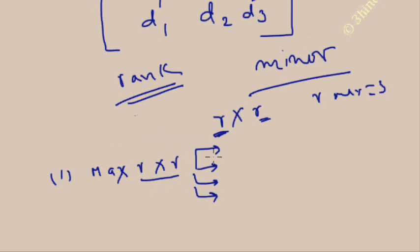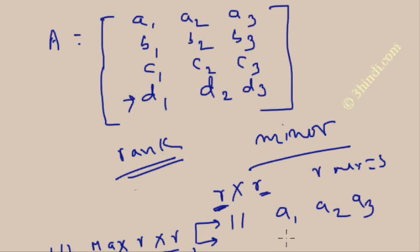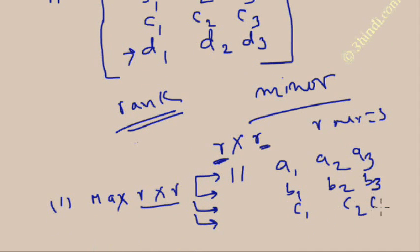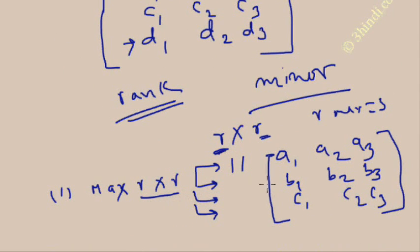The second step is to calculate the determinant value. Suppose the first minor of this matrix is obtained by removing one row: the first minor is a1, a2, a3, b1, b2, b3, c1, c2, c3. The other matrix can be obtained by removing the first row and taking the rest of the 3 rows, giving a 3×3 type of matrix.